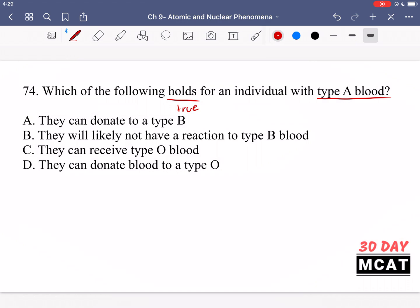So option A is saying they can donate to type B. That's incorrect because type B, a person who has this type of blood, has antigens for type B, and therefore they have antibodies against every other type. So they're going to have antibodies against type A blood. And so the recipient is not going to be able to accept this blood.